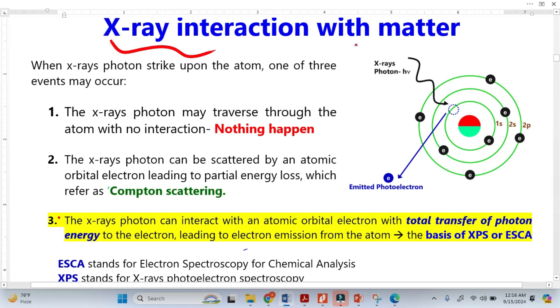When X-rays interact with a sample, matter, atom, or in some cases with electrons, basically three phenomena can happen. The third phenomenon is related to XPS. We get XPS when X-rays interact with matter.